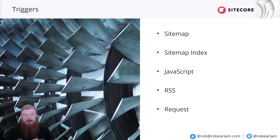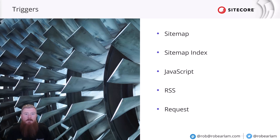The final trigger is the request trigger. This is used when you need to physically crawl a website source. You provide the URL to the top-level page — typically the homepage — and the connector downloads the markup of that page, finds any anchors in it, and follows those anchors through the site. You can also configure how deep you want this to go, making sure you get all the documents that you need.